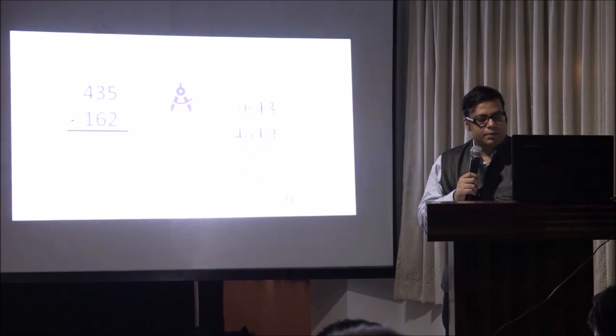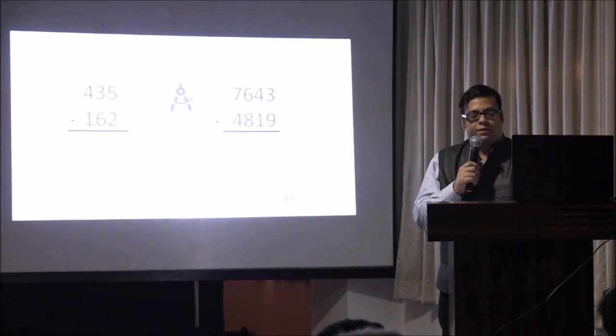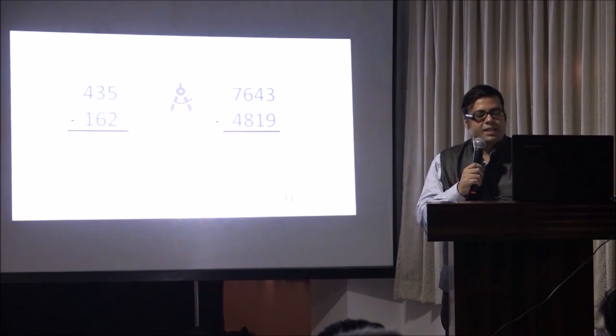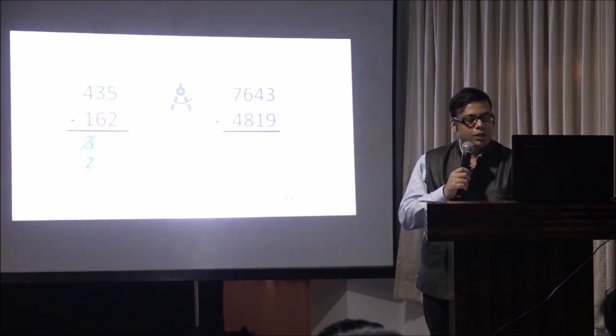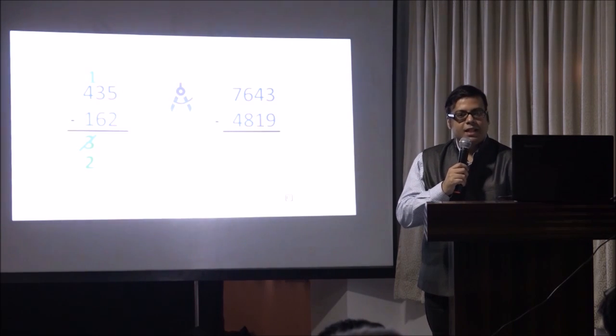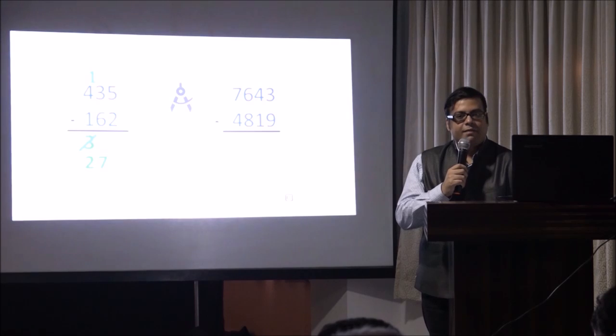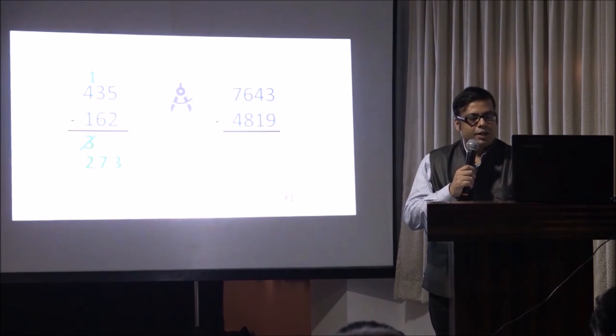Let's take another one. Do this with me. Let's do it together, all of us. 4 take away 1 is 3. There's a negative. 3 becomes 2. So 13 minus 6 is 7. 5 take away 2 is 3.